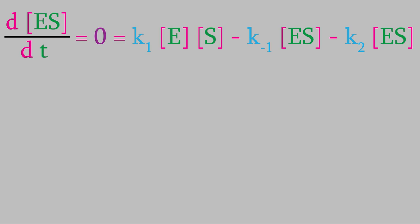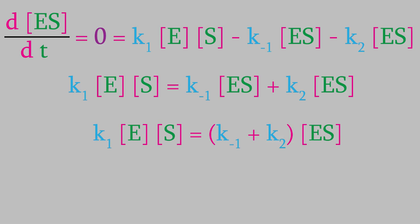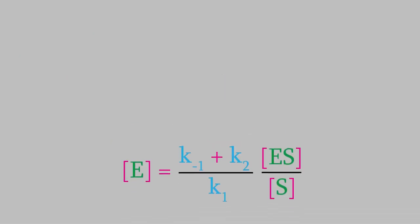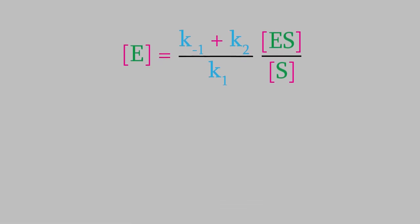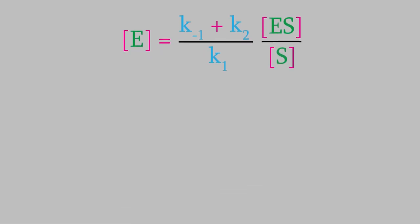The first thing we'll do is move the K1 term to the left side of the equation. I want that term to be a positive number, so we'll multiply everything by minus 1. Next, let's factor ES out of the terms on the right side. And finally, we'll solve the equation for E by dividing both sides by K1 times S. Great! We now have an expression for E, the concentration of free enzyme, which can be a tough thing to measure.